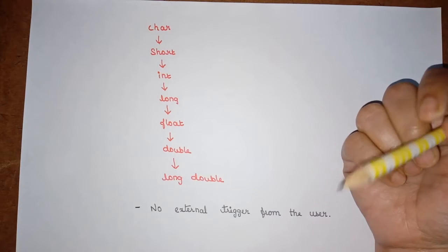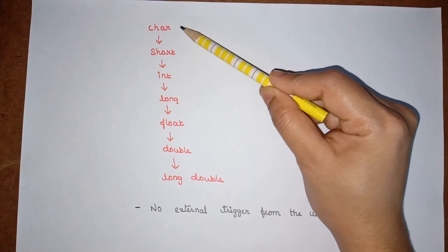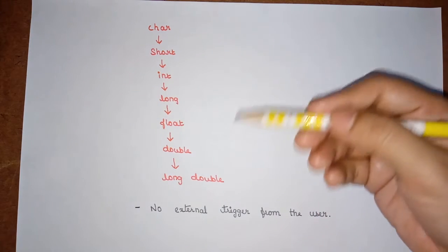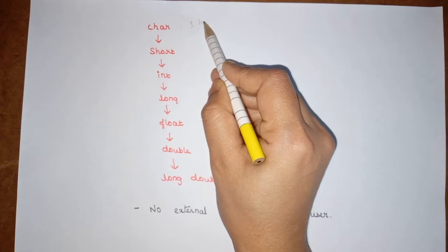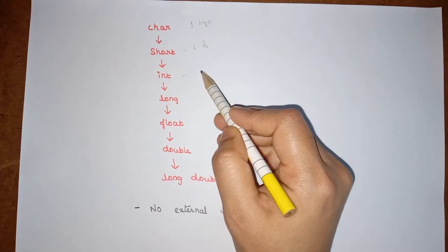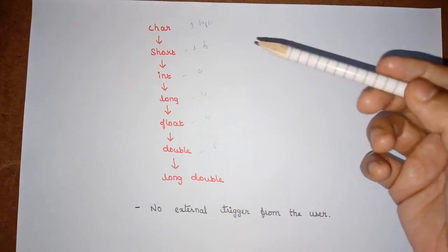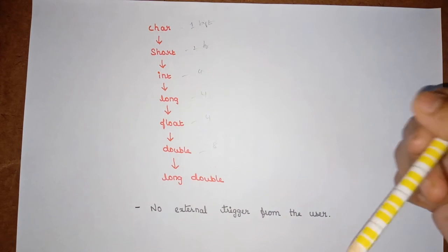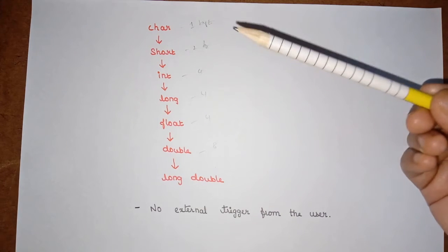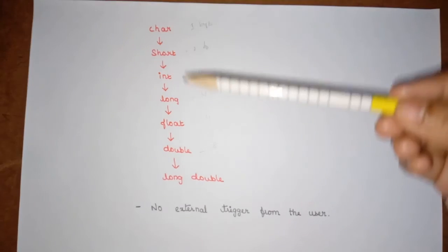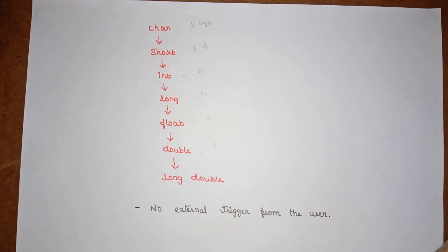This is an example of when we have a character type of data, which is the lowest data type. The lowest and highest data types are categorized based on size. Character usually takes one byte, whereas short takes two bytes, int takes four bytes, long also takes four, float takes four, and double takes eight. All data types have their own memory size, and based on size only we categorize them as lower or higher data type. Character is the lowest data type and long double is the highest.